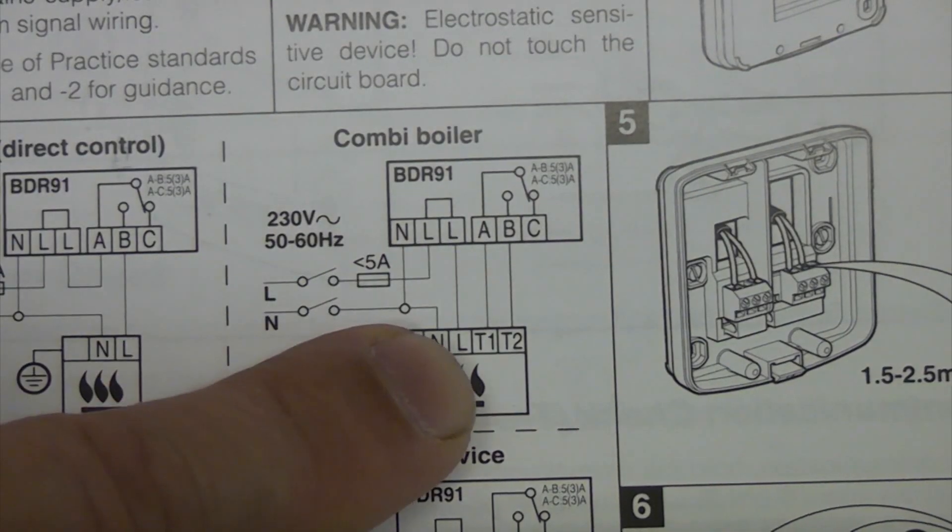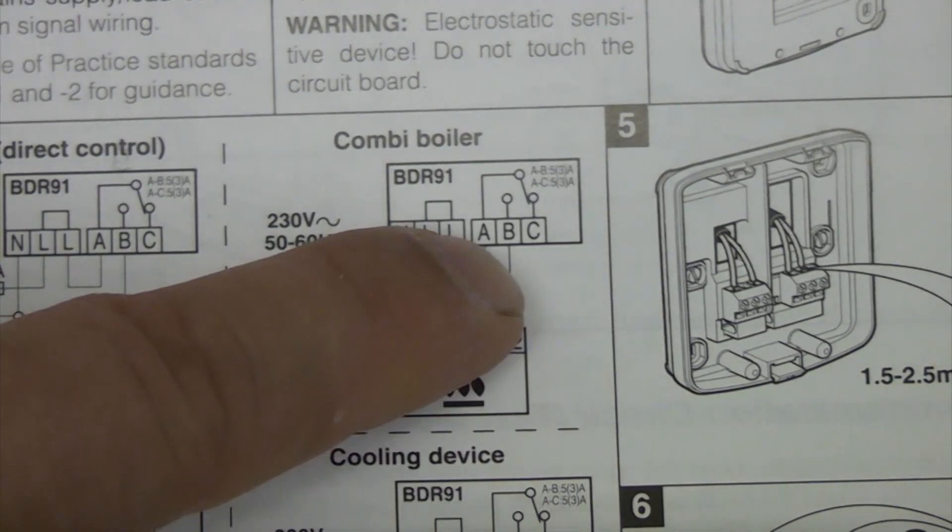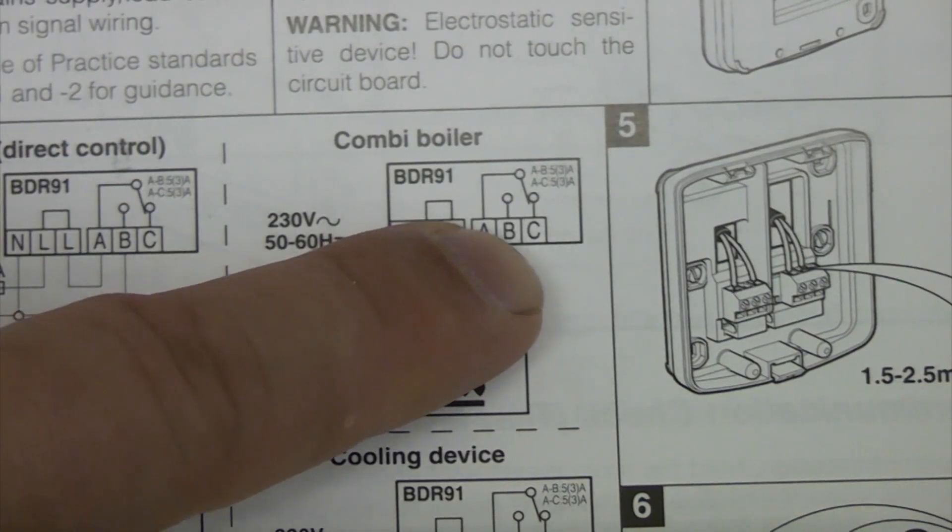And then if we look over here at T1 and T2, you can see that that goes to A and B on the actual boiler.